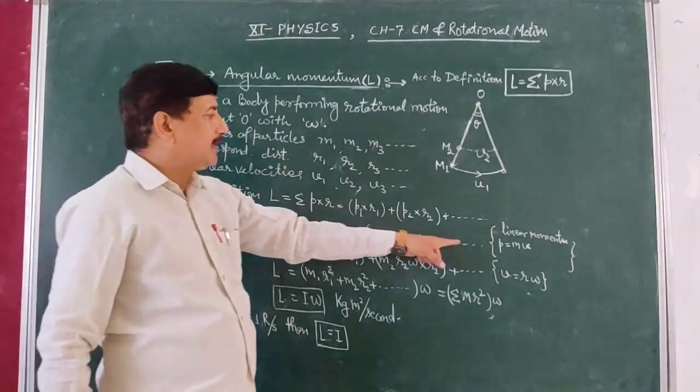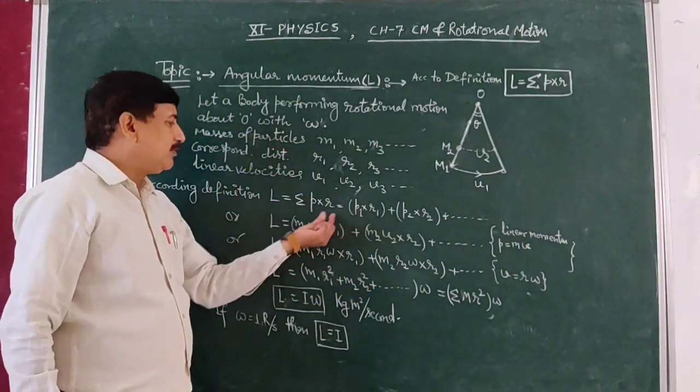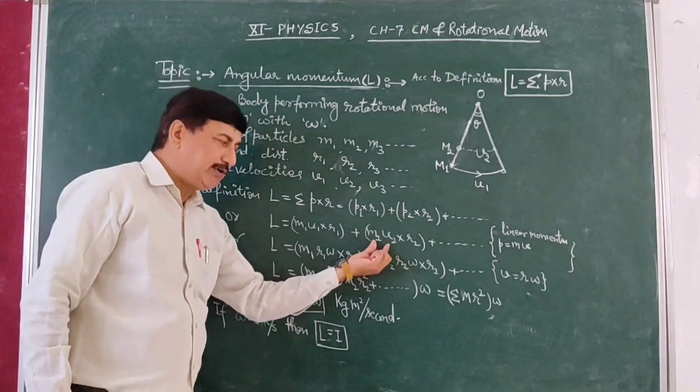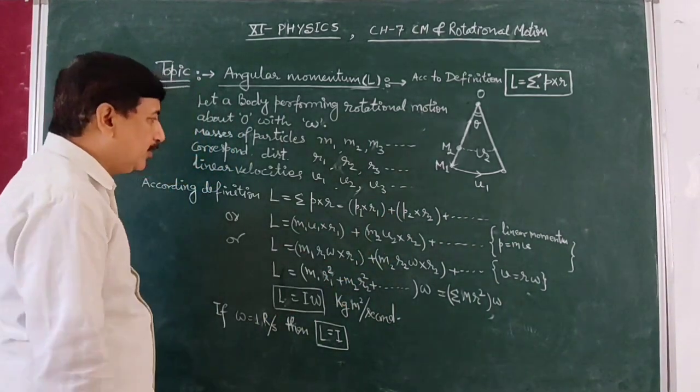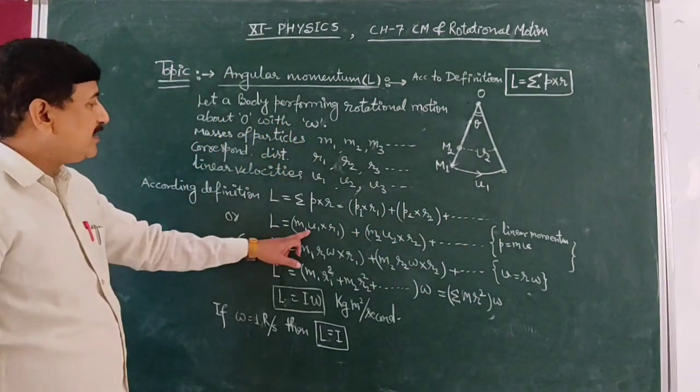But what is this equal to? It equals the linear momentum. So P1 is M1V1, and R1 is the perpendicular distance.